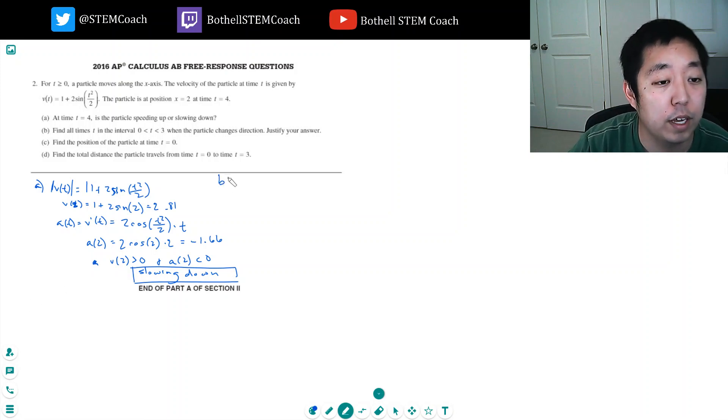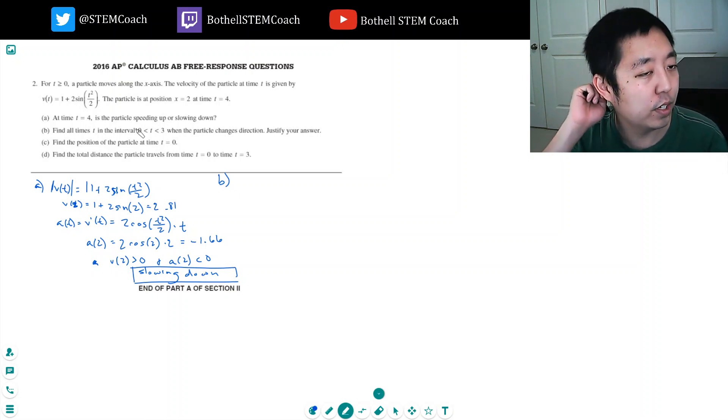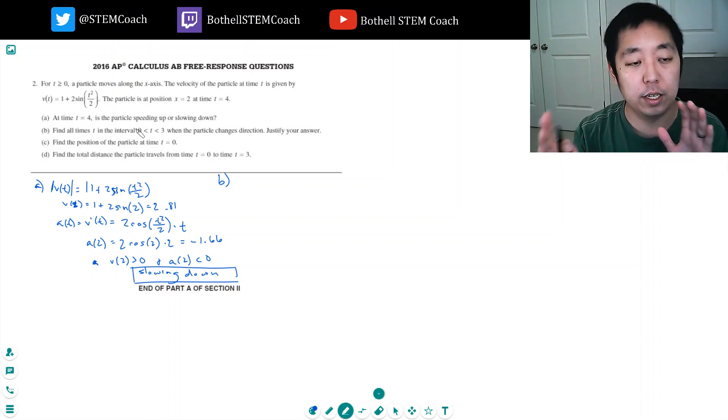Part b, find all times t in the interval 0 to 3 when the particle changes direction. Justify your answer. Changing direction in a continuous function like this is, in order to change direction, I got to go through 0, the velocity of 0.